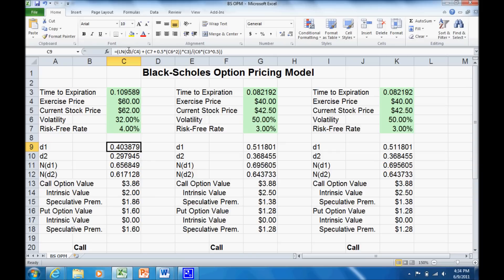The D1 formula—you can see that set up up top here in the formula bar. D2 calculates the area under the normal distribution table for D1, D2, and finally plugs those into the value of the call and the value of the put. If you look at the formula bar, you can see the formulas for all those calculations.